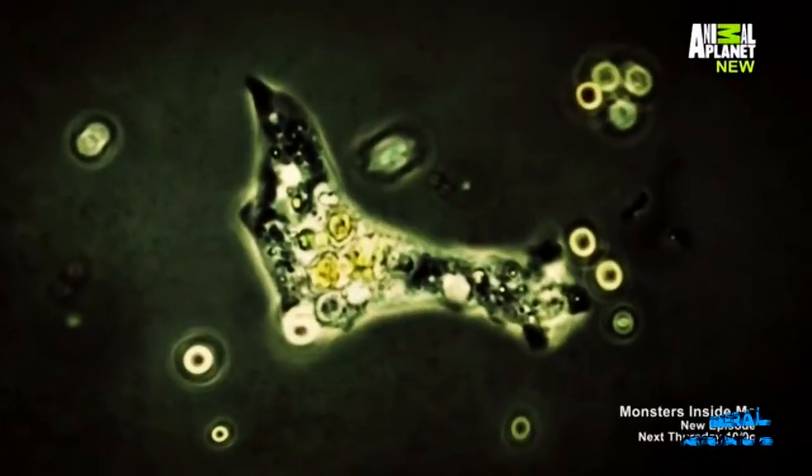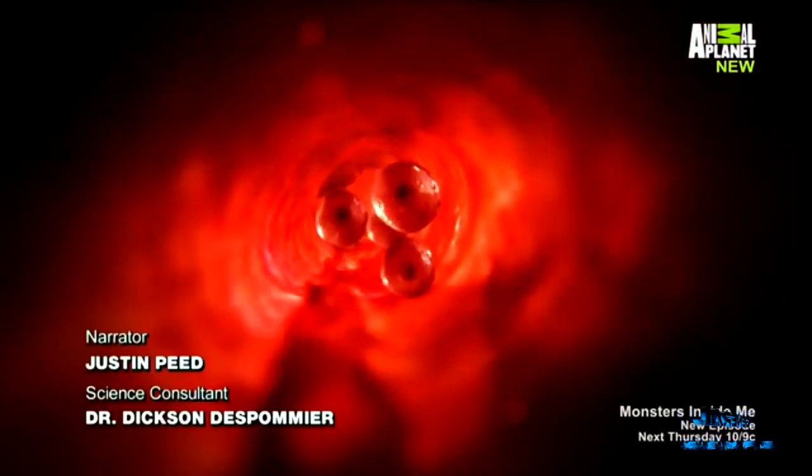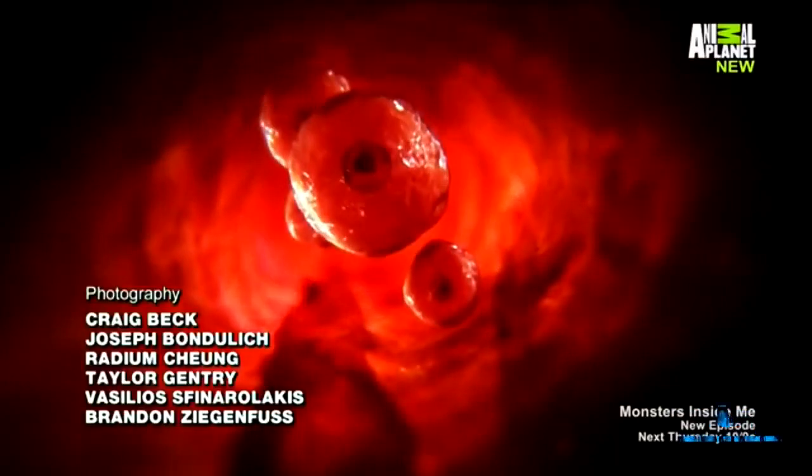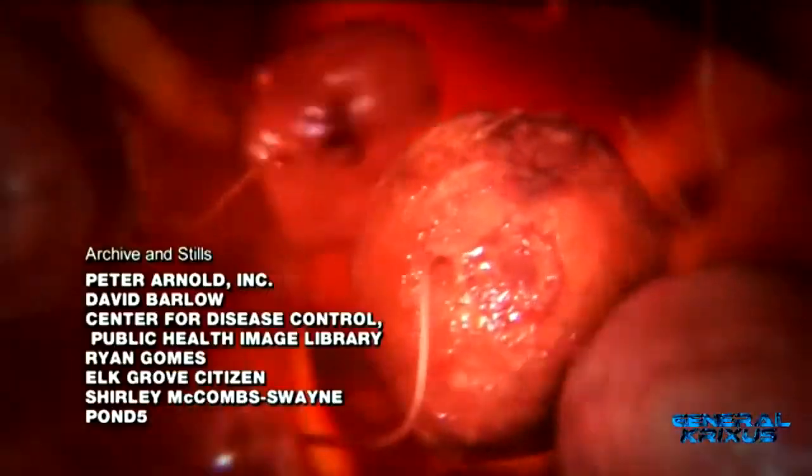Naegleria fowleri is most common in lakes and rivers of the southern states, but it's been found as far north as Minnesota and as far west as California. Cases of human infection with Naegleria fowleri are actually very rare. Since 2004, only 34 cases have been reported in the United States, and the majority of those cases occurred in Texas and Florida.